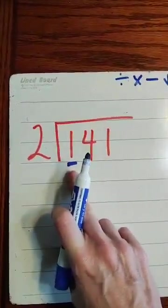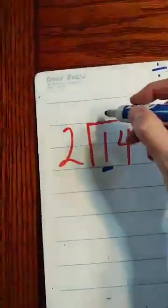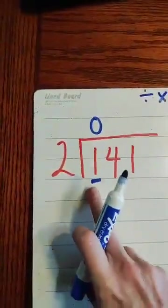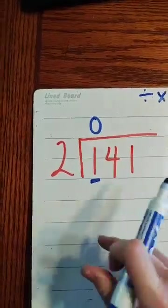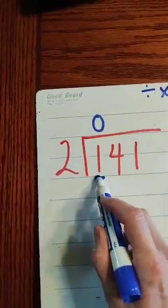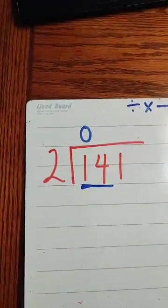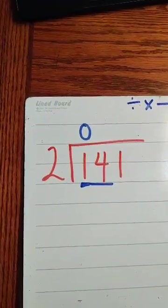Will 2 go into 1? You're right, it doesn't, so we need a zero and we're going to put that zero right above that 1 because that's what we're talking about, 2 not dividing into. So now we pull another number. Does 2 go into 14? Well, yes it does.